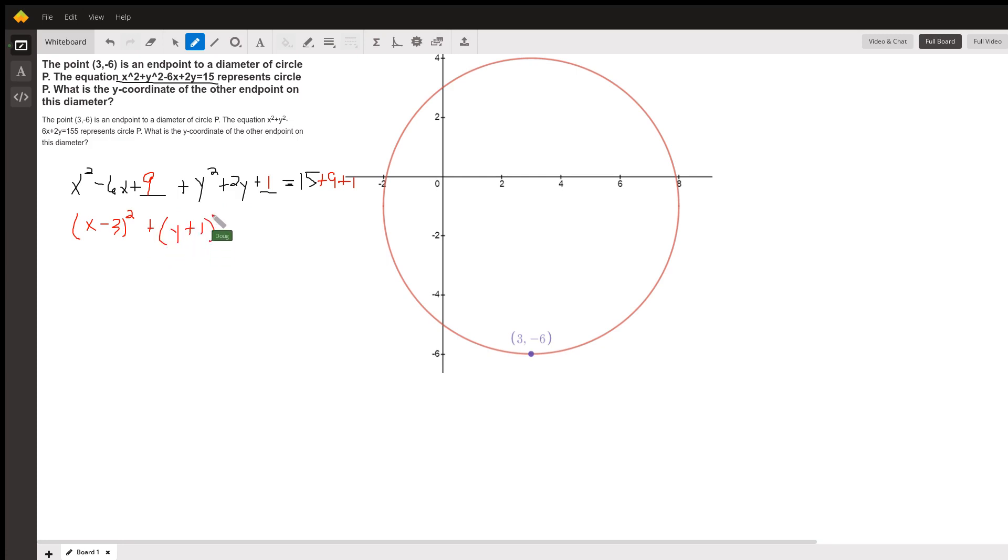And when I add these constants on the right, I get 25. That tells us that the circle has a center at 3, negative 1 with a radius of 5.